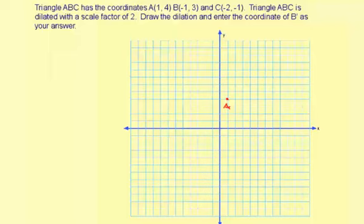Point B is negative 1, 3, so go ahead and plot that. And C is negative 2, negative 1. So there's point C.